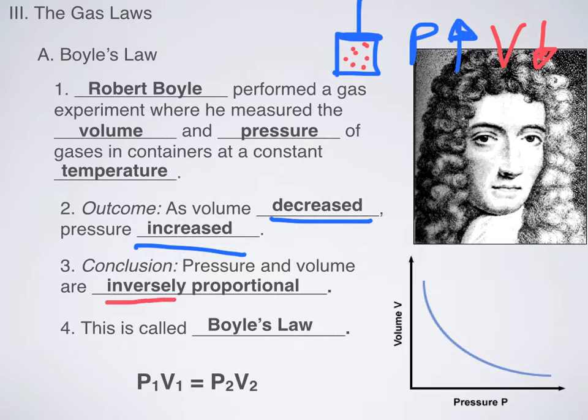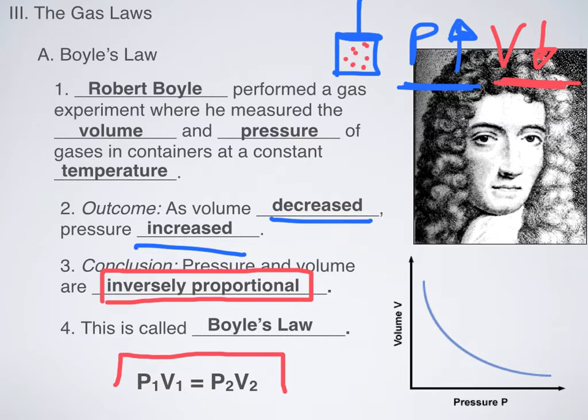And that is technically what his conclusion was. Pressure and volume are inversely proportional. That is a fancy term for if one variable goes up, like pressure, another variable will go down, like volume. And we call this Boyle's Law. We named it after him. And this is technically what Boyle's Law looks like, right here at the bottom. P1 times V1 equals P2 times V2. And all that tells us is that if pressure goes up, volume goes down. And so, you will have a new pressure, and you'll have a new volume.